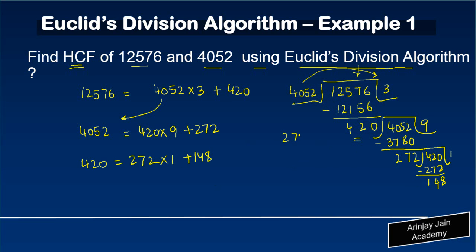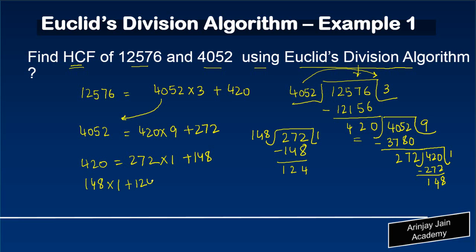Now I divide 272 by 148. It goes one time, and the remainder is 124. So we write: 272 = 148 × 1 + 124.